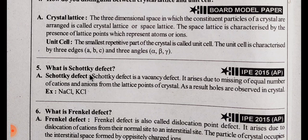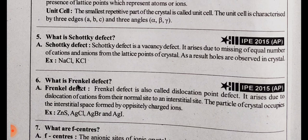What is Schottky defect? Schottky defect is a point defect. It is also called a vacant defect. If the anion and cation size is similar, it has this defect in the compounds. If any cation is missing, the same number of anions is missing. That is a Schottky defect.